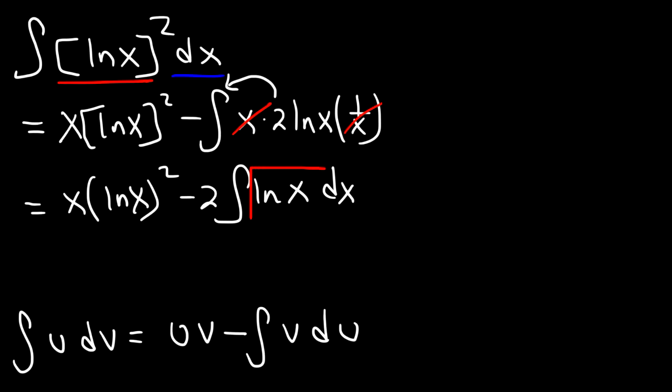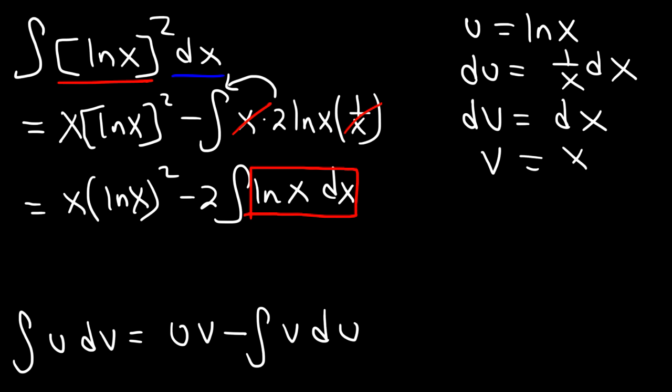Now we need to use the integration by parts formula again for the integral of ln x dx. And so for that problem we're going to set u equal to ln x. Du is going to be 1 over x dx. That's the derivative of ln x. dv we're going to make equal to dx, and v is going to be equal to x.